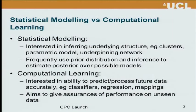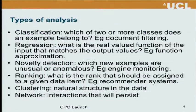In computational learning, the interest is more on the ability to predict and process future data accurately — it's not so much about being sure you've got the right structure precisely defined, but being sure you're going to make the right choice and decision in the future. For instance, classifying or predicting future outputs or mappings. The aim of the analysis here is to give assurances about performance on unseen data — confidence estimates about the performance you're going to see on future data.